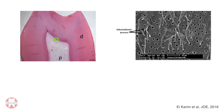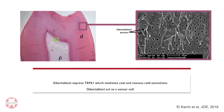We wondered whether applying biodentine can decrease the pain sensation of patients. The odontoblasts have a process that goes deep into the dentine, and these odontoblasts act as sensor cells because they express transient receptor potential (TRP) channels. These channels act as pain sensors — with these receptors, odontoblasts sense noxious cold, heat, mechanical stimulation, and chemical stimulation.